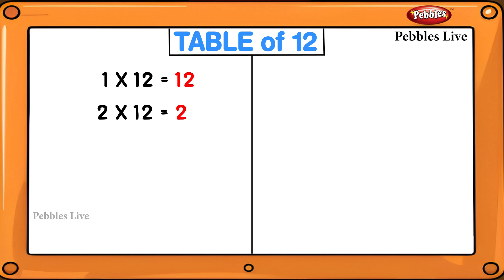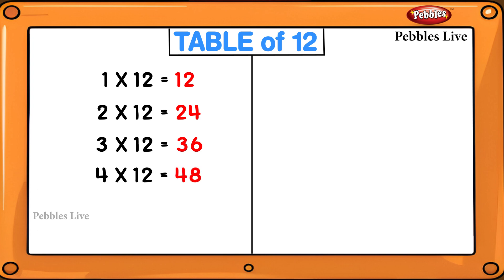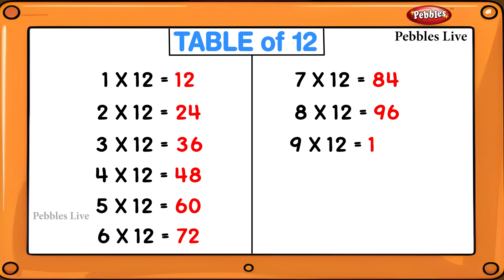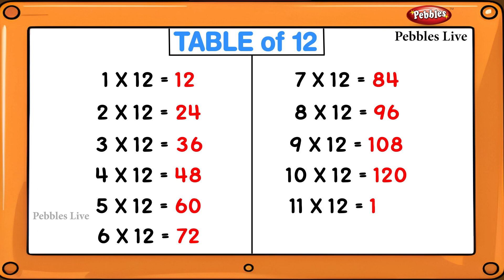1 twelves are 12, 2 twelves are 24, 3 twelves are 36, 4 twelves are 48, 5 twelves are 60, 6 twelves are 72, 7 twelves are 84, 8 twelves are 96, 9 twelves are 108, 10 twelves are 120, 11 twelves are 132, 12 twelves are 144.